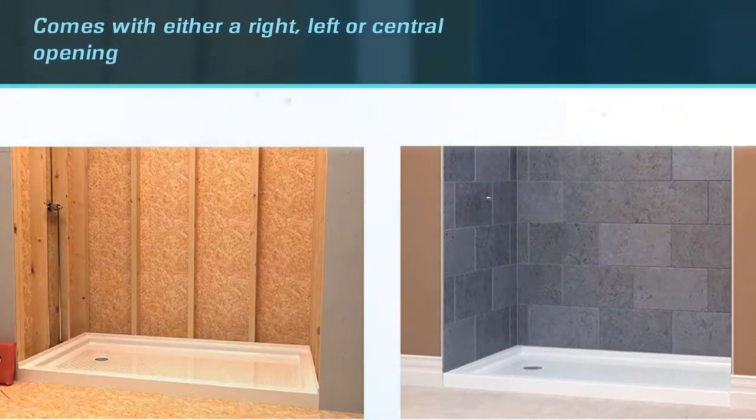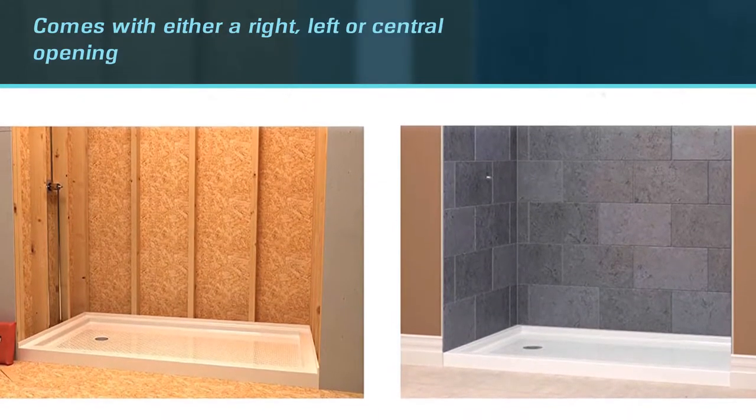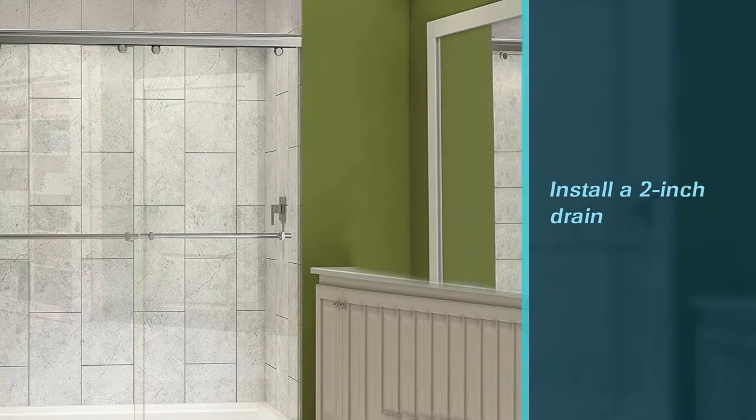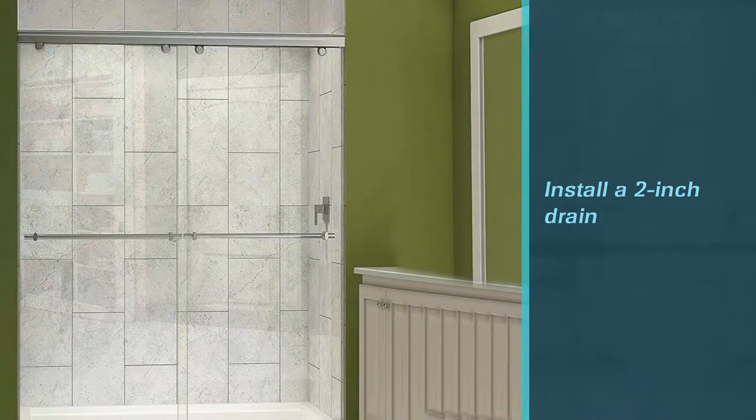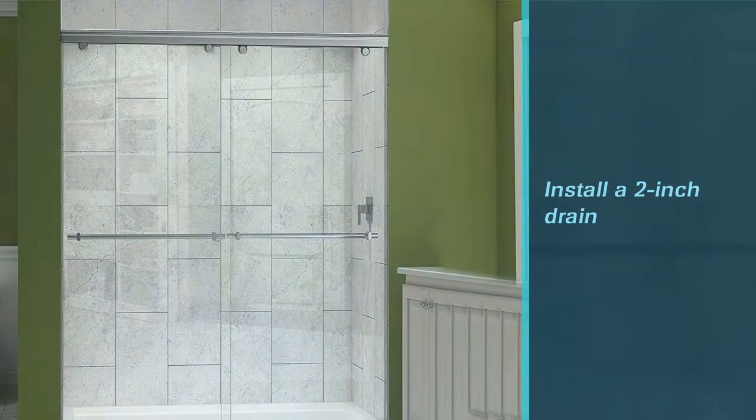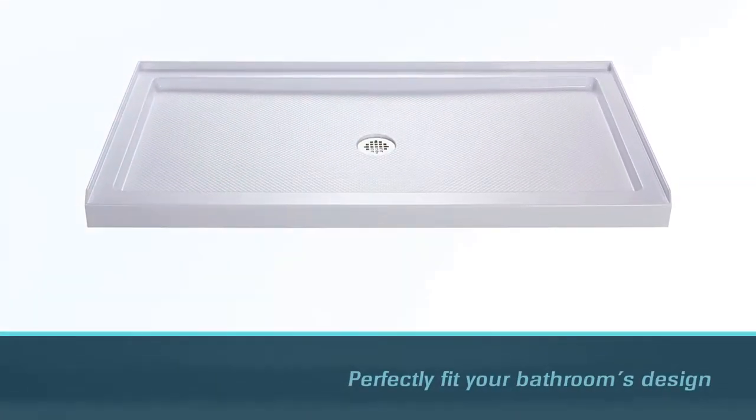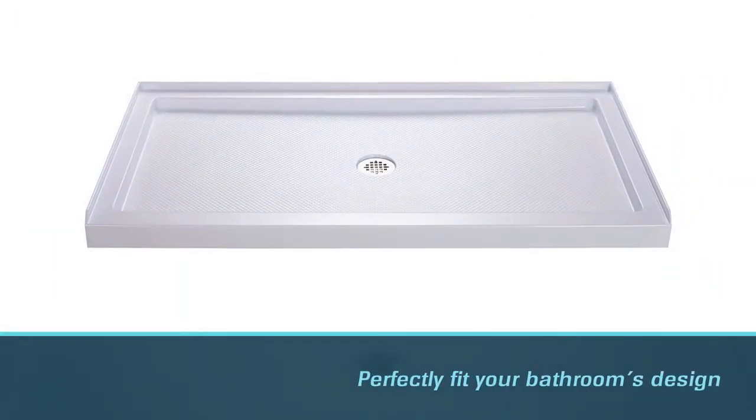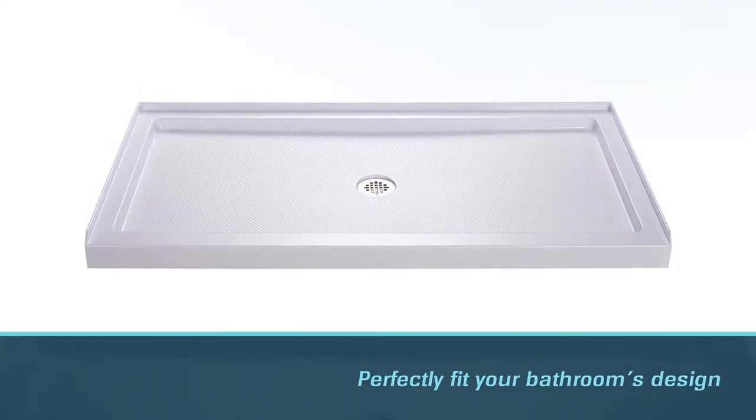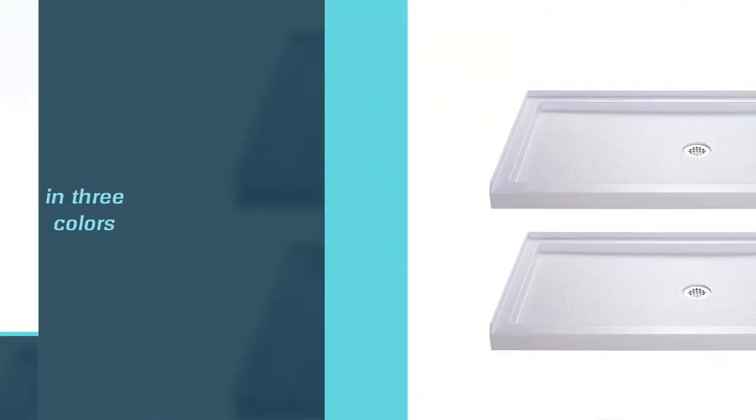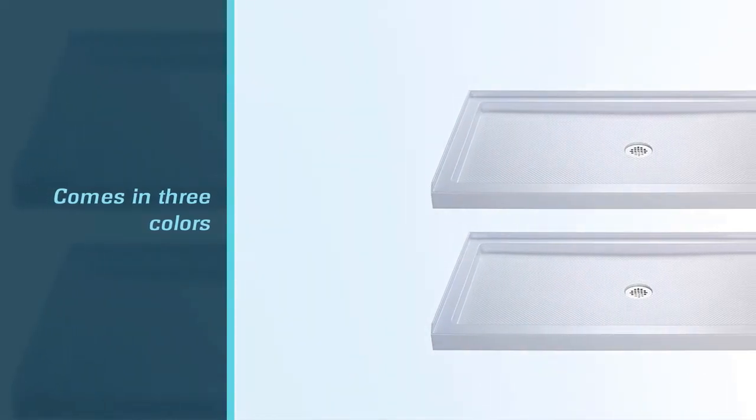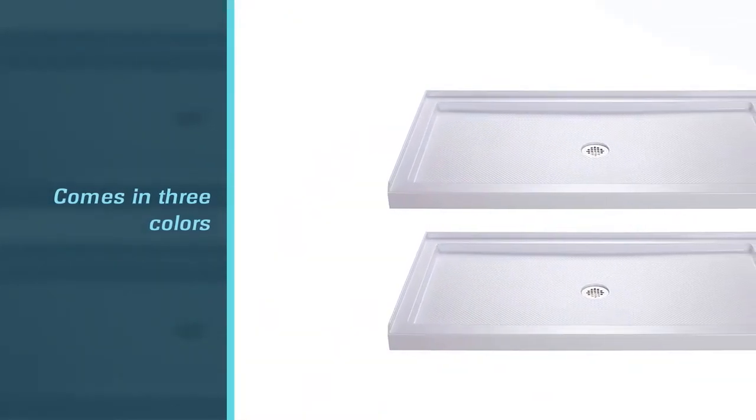To perfectly fit your bathroom's design and shower tiles, the pan comes in three colors: biscuit, black or white. The base is made with non-porous and high-gloss acrylic material for better durability and easy maintenance. It's even reinforced with fiberglass and covered with a slip grip layer to prevent falls.